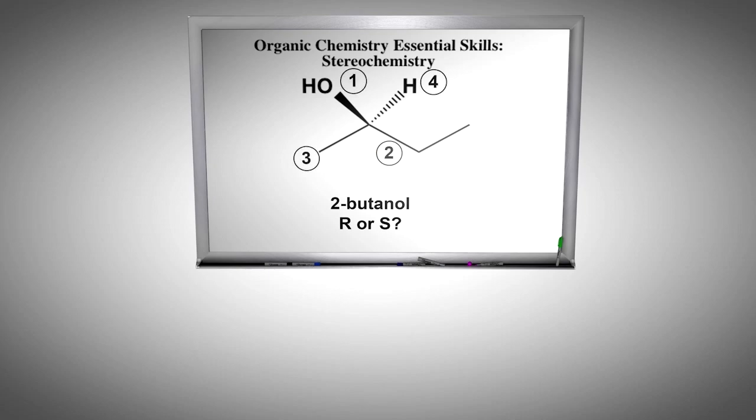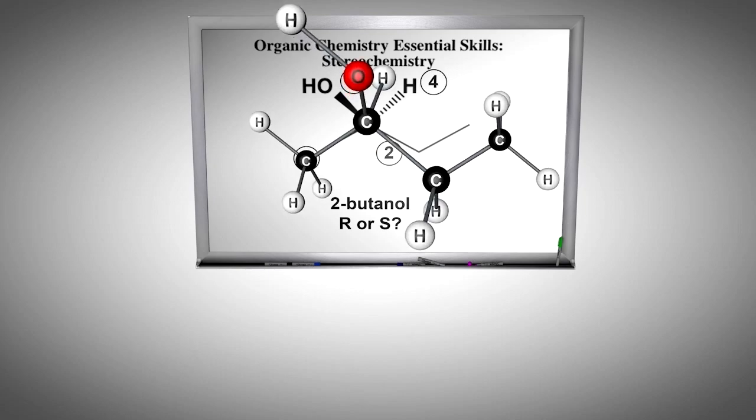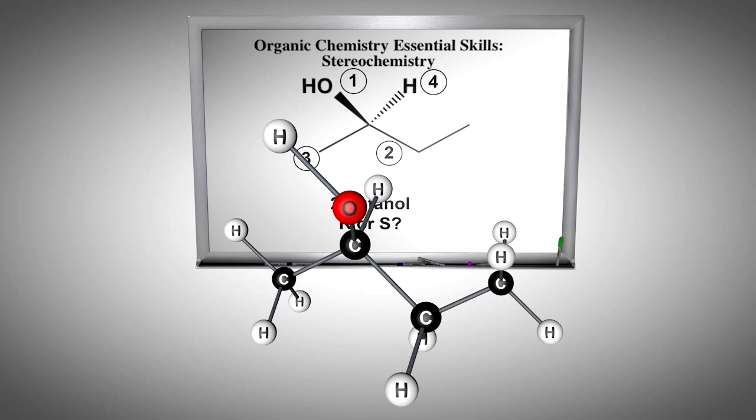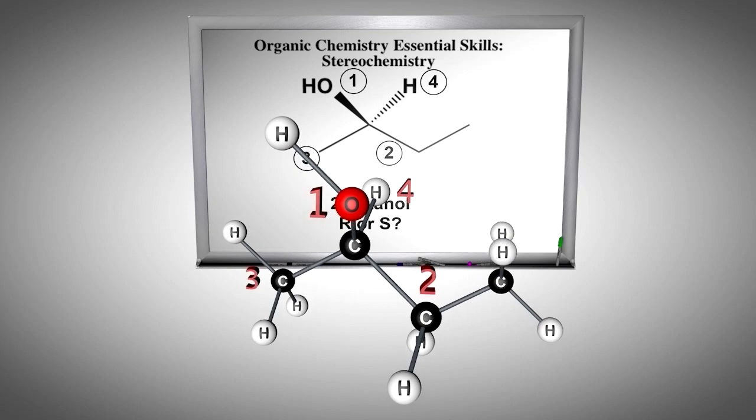Next, we assign priorities to the four groups, fold the molecule into three dimensions in our mind, and mentally rotate the group of lowest priority to the back.